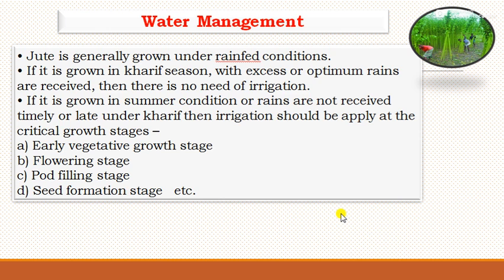Jute is generally grown under rainfed conditions. If grown in the kharif season with adequate rains, there is no need for irrigation. If grown in summer or when rains are delayed, irrigation should be applied at critical growth stages: early vegetative stage, flowering stage, pod filling stage, and seed formation stage. When grown for fiber purpose, the most critical growth stage is the flowering stage, so irrigation must be applied at flowering.